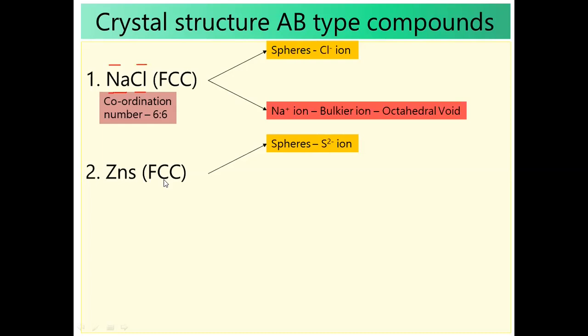Zinc should occupy the octahedral void — because the number of spheres equals the number of octahedral voids — or zinc should occupy half of the tetrahedral voids, since tetrahedral voids are double the number of spheres. Based on size, Zinc belongs to the D-block element on the extreme right side, so zinc is a smaller cation. Hence, it should occupy the tetrahedral void.